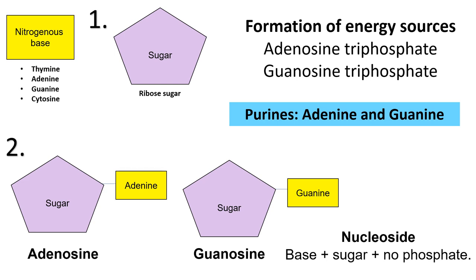ATP and GTP are mainly involved with energy. Thymine triphosphate and cytosine phosphate — the pyrimidines — are more involved in DNA synthesis. When you attach a sugar with a base, you form a nucleoside because there's no phosphate group. So instead of forming adenine, you form adenosine; instead of guanine, it's called guanosine. At this stage there is no phosphate.